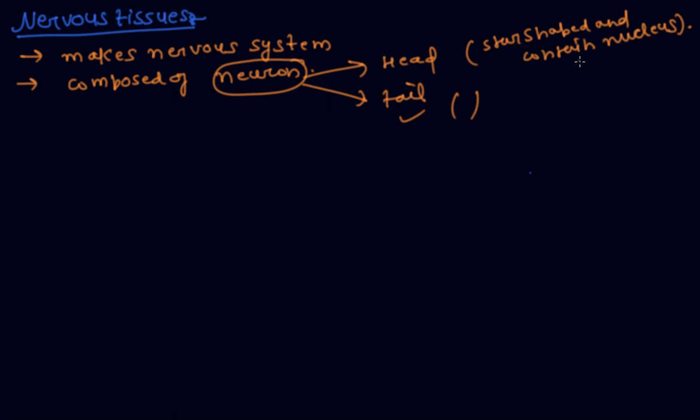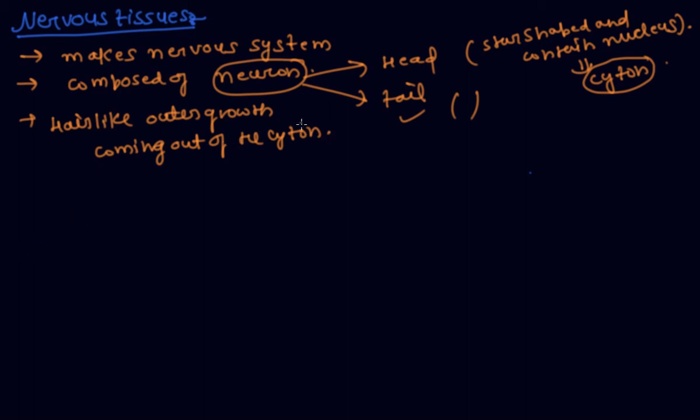There are hair-like outer growths coming out of the cytone. These are called dendrites. The tail ends in axon terminals. Dendrites receive nerve impulses while axons relay nerve signals.